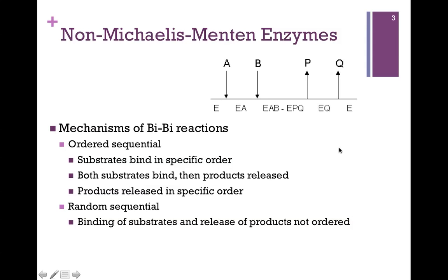It's sequential in that we have to bind both substrates before any catalysis occurs, and there's an order in which the substrates bind and the products release. There's another sequential model where both substrates bind before catalysis occurs, but in some cases the order in which they bind is random, and there may be a random order in which the products are released. But in either case, if it's a sequential mechanism, both substrates must bind before any catalysis occurs.